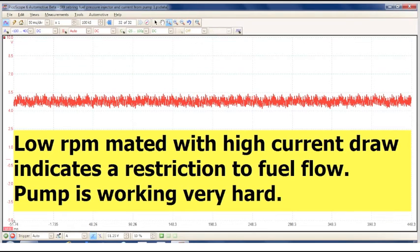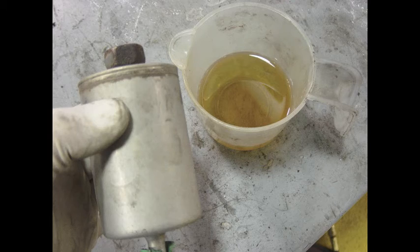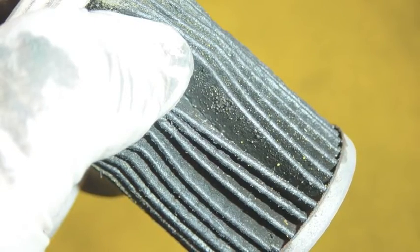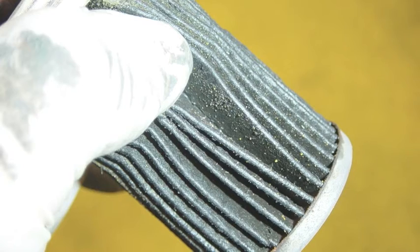The reverse side of that is a low RPM made with a high current draw. This indicates the pump is working really hard, likely because of restriction downstream of the pump. The most common cause for a restriction downstream of the pump is a clogged fuel filter from lack of maintenance.